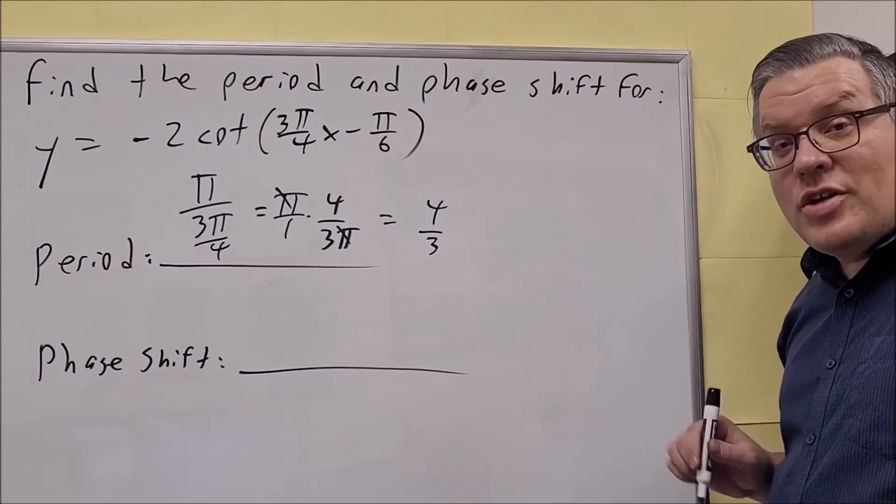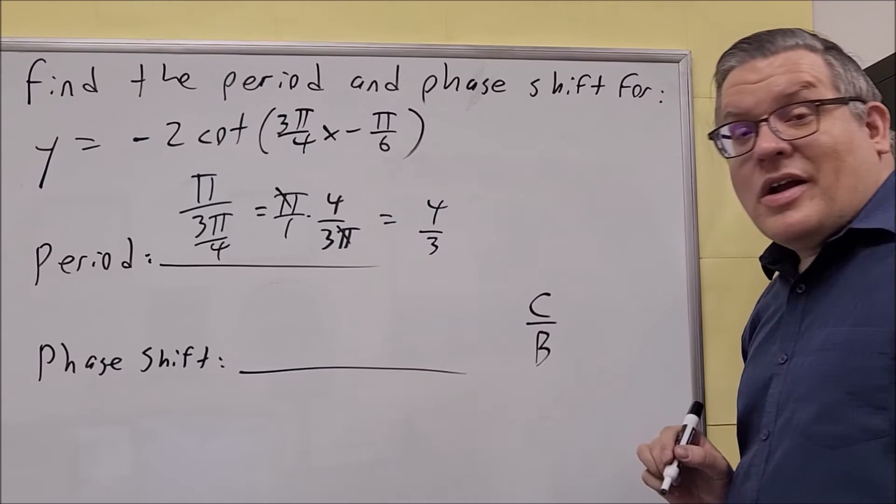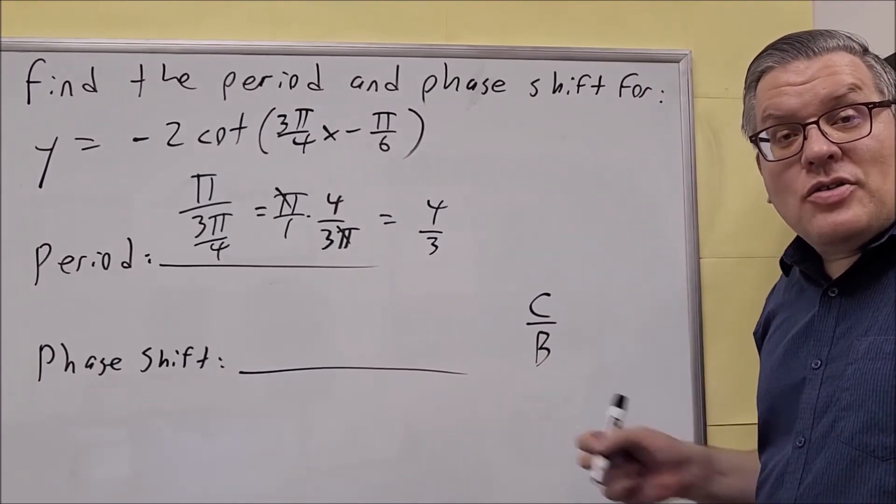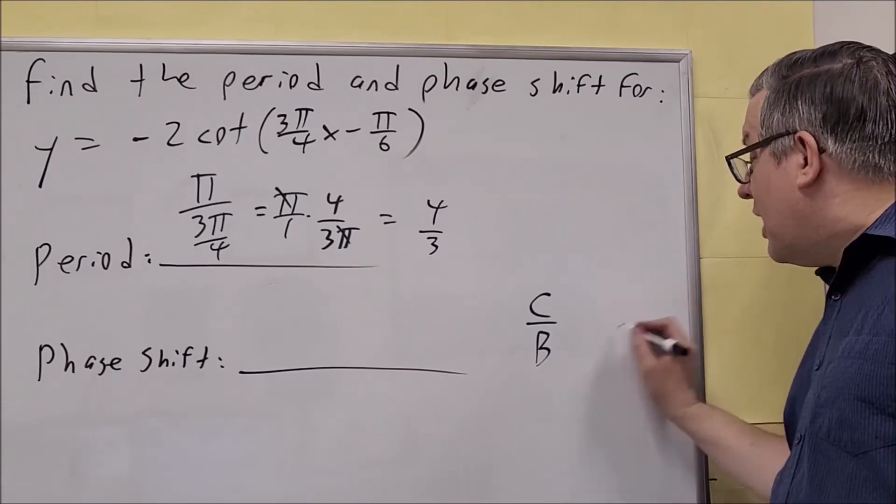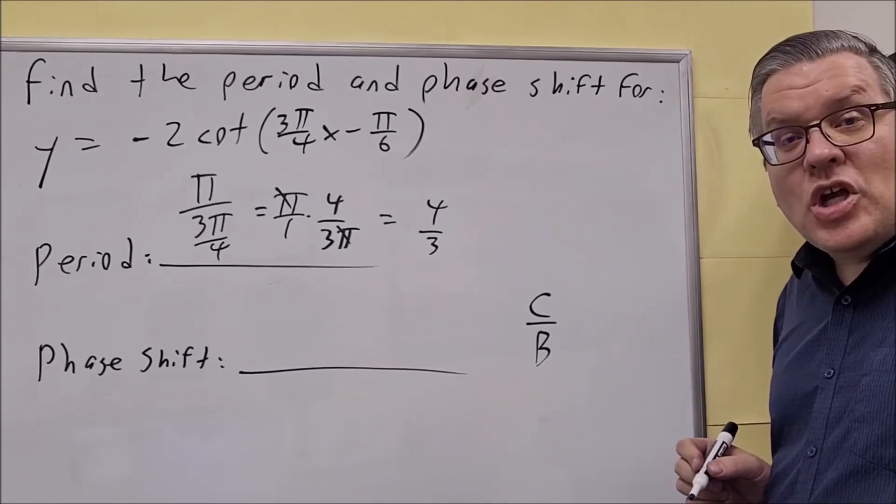Next we want phase shift. Now because it's a cotangent graph, this one is just c over b. We don't have that extra part on the end because it's a cotangent graph. Only the tangent graph has that extra minus part that comes after that. This one is just c over b.